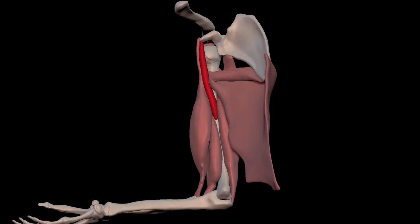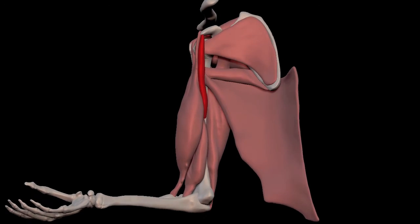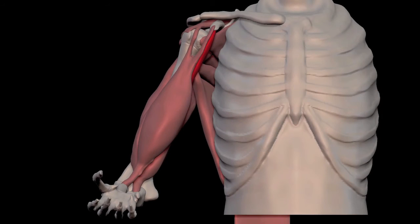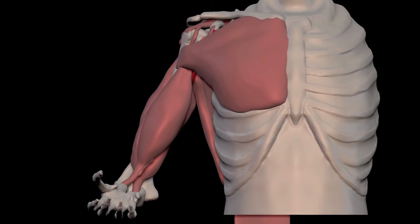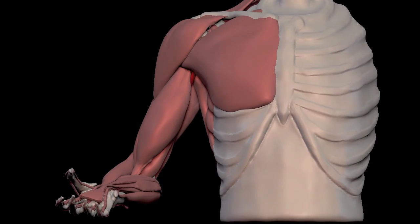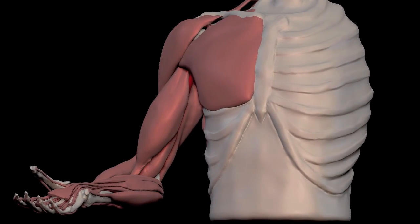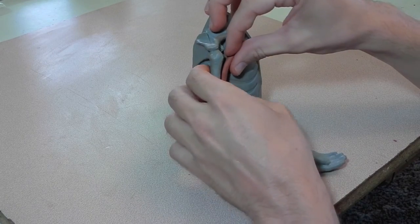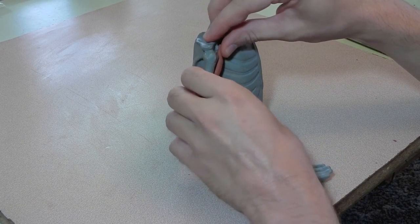You can see the subscapularis goes underneath. Here is the pectoralis major and the deltoid. And just all the other muscles of the arm. Here is the coracobrachialis in clay.